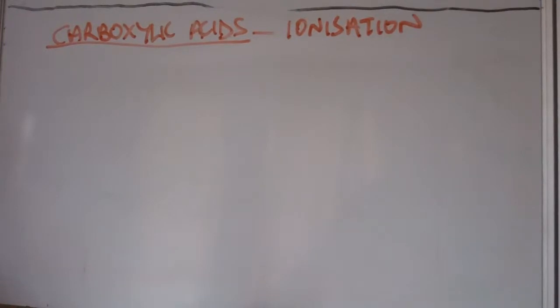If you heat a primary alcohol with some acidified dichromate solution, like we looked at before, you will get a carboxylic acid. So the next thing we need to go through is carboxylic acids and how they ionize in water.